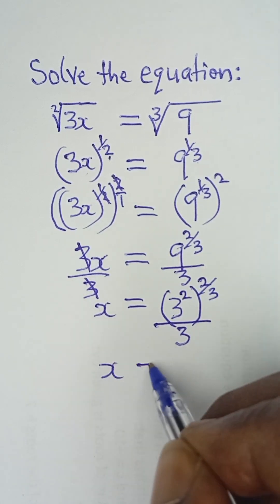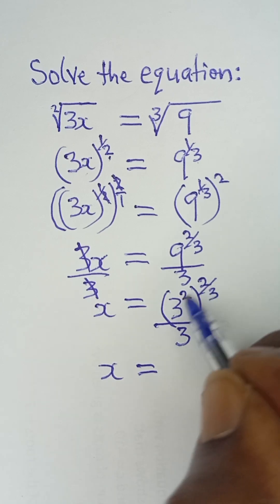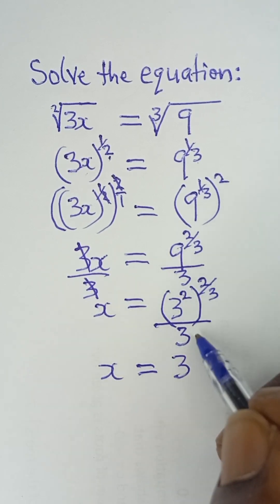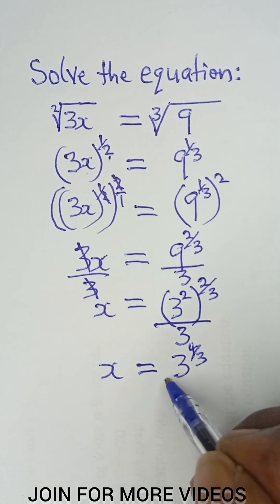Then x equals—these powers multiply each other—3 raised to the power of 4. 2 multiplied by 2 is 4, so 4/3 when I multiply these powers, all divided by 3.